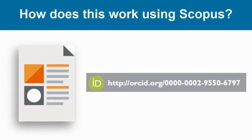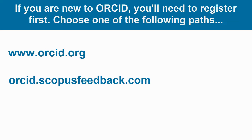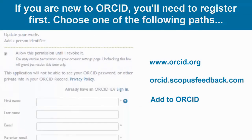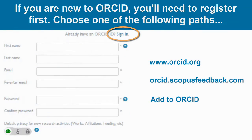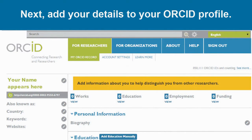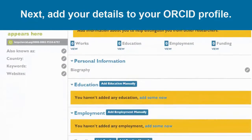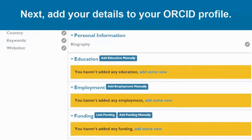Let me show you how this works with Scopus. First, if you are new to ORCID, begin by either going to www.orcid.org, orcid.scopusfeedback.com, or by clicking Add to ORCID from your Scopus author profile page. Then register for an account. If you already have an account, sign in. Next, although it is not necessary for importing your Scopus information into ORCID, taking the time to fill out your ORCID record may help the identification of your profile and subsequent steps.